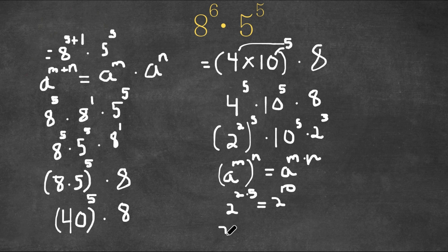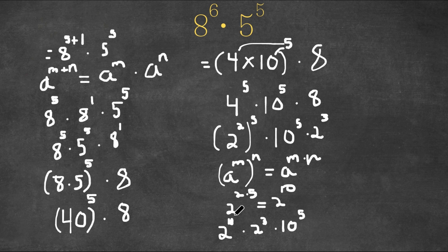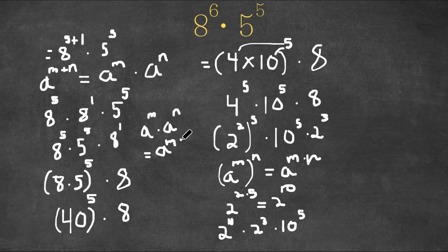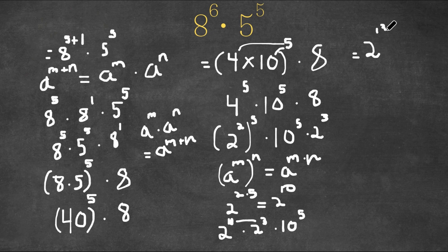So we have 2 to the power of 10 times 2 to the power of 3 times 10 to the power of 5. When multiplying two exponents with the same base — a to the power of m times a to the power of n equals a to the power of m plus n — we simply add the exponents. So 2 to the power of 10 times 2 to the power of 3 equals 2 to the power of 13, times 10 to the power of 5.